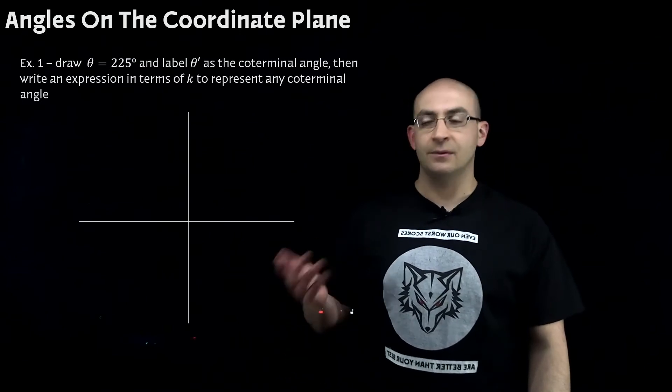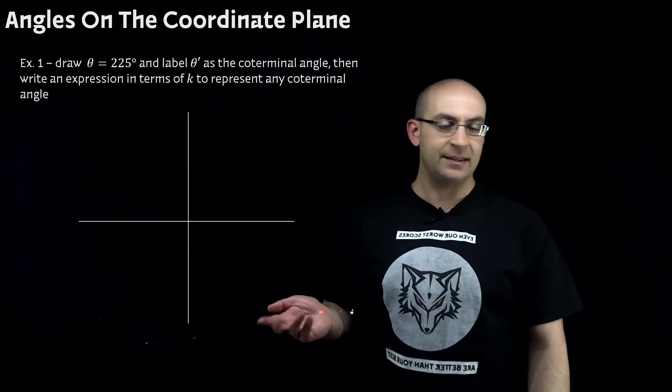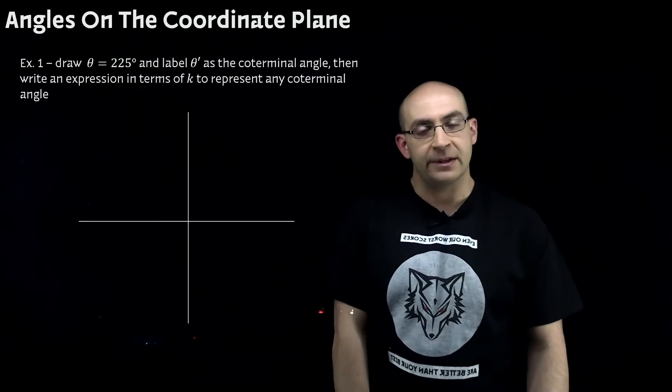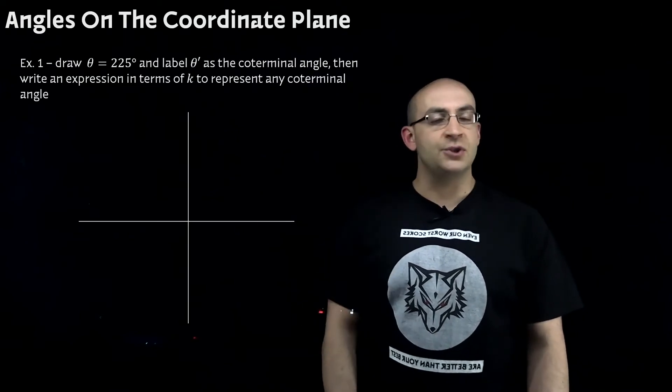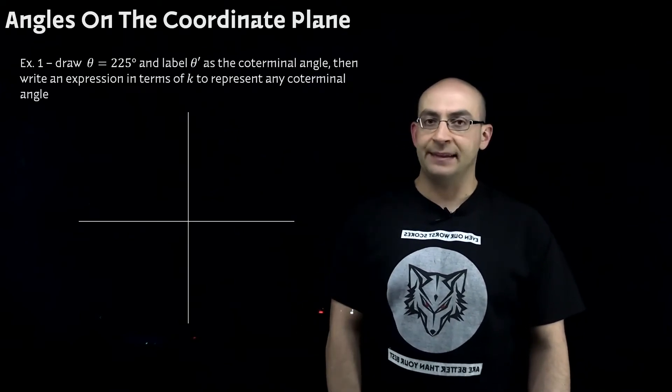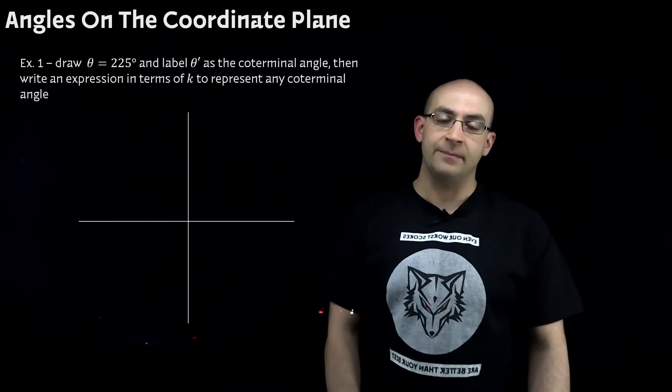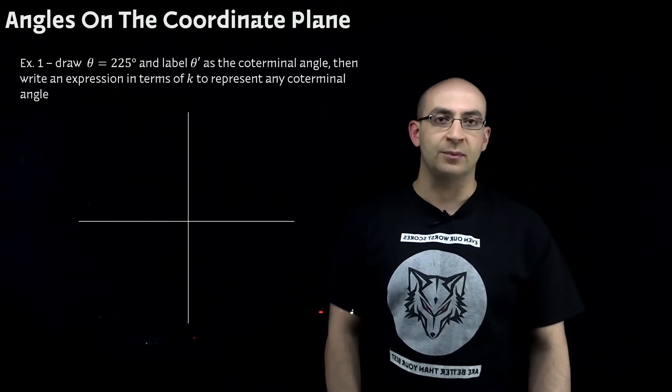We can certainly reference it as x. It doesn't matter. But theta is more preferred in trigonometry. So I want to draw a 225 degree angle and label theta prime as the coterminal angle point.